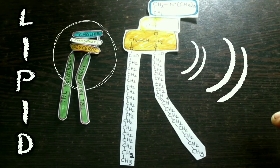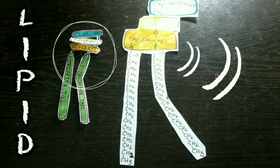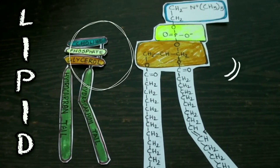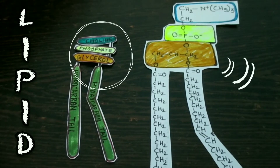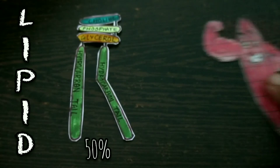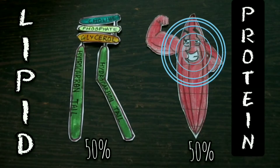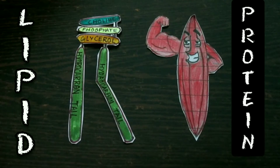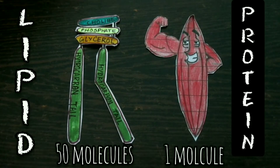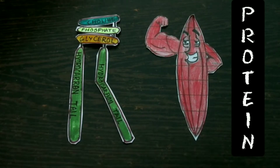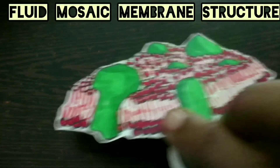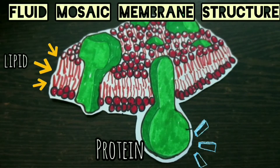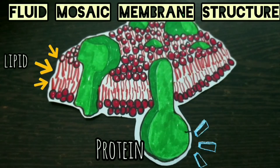Lipids are the fundamental structural elements of membranes. Proteins are responsible for carrying out specific membrane functions. Most plasma membranes consist of approximately 50% lipid and 50% protein by weight, with the carbohydrate portion of glycolipids and glycoproteins constituting 5 to 10% of the membrane mass. Since proteins are much larger than lipids, there are many more lipid molecules than protein molecules — about 50 lipid molecules for every one protein molecule. In this video we also discuss how Singer and Nicholson proposed the fluid mosaic model of membrane structure, which remains the basic paradigm for the organization of all biological membranes.